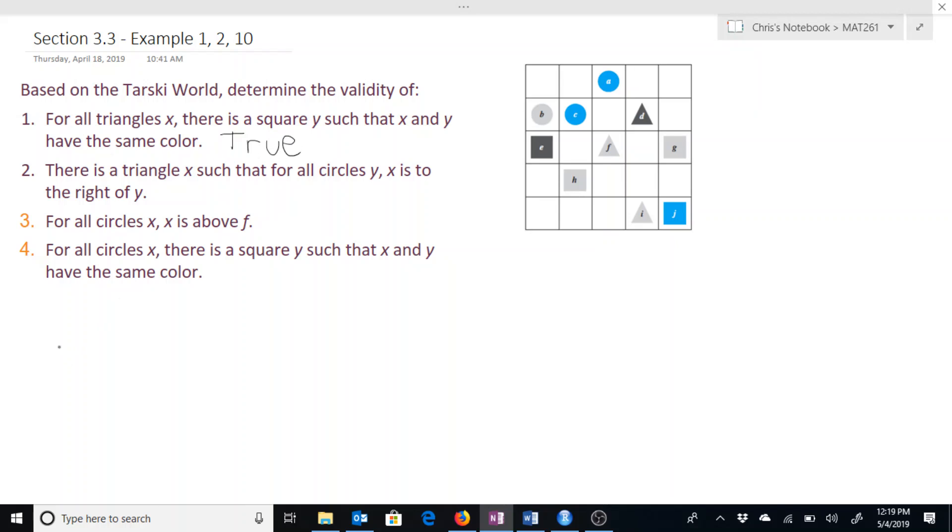And we can even write that with a quantifier sense as for every triangle x, so for every x we have triangle x. So for every x that's a triangle, there is a square y, so there exists y that's a square, such that x and y have the same color.